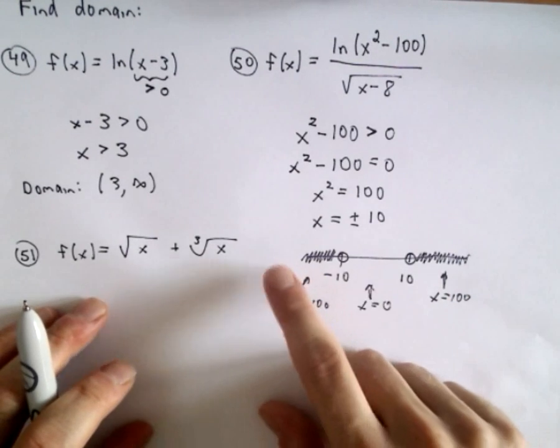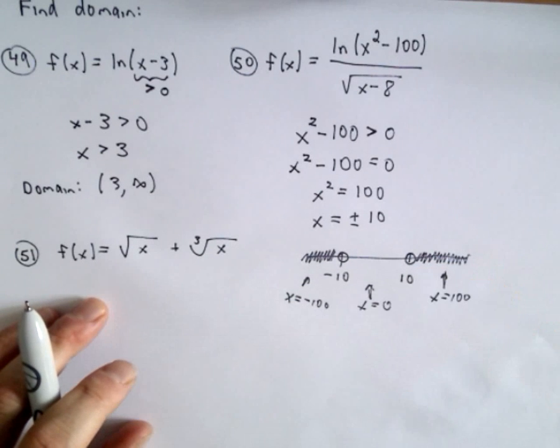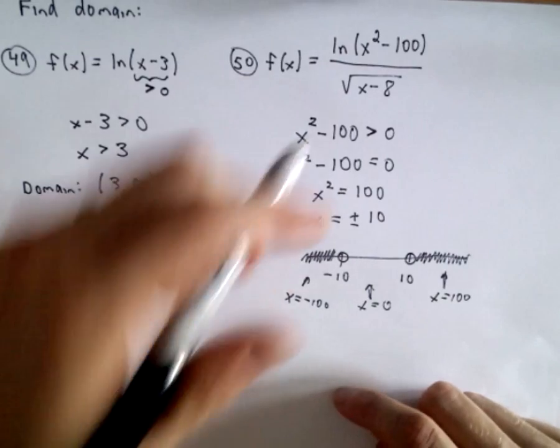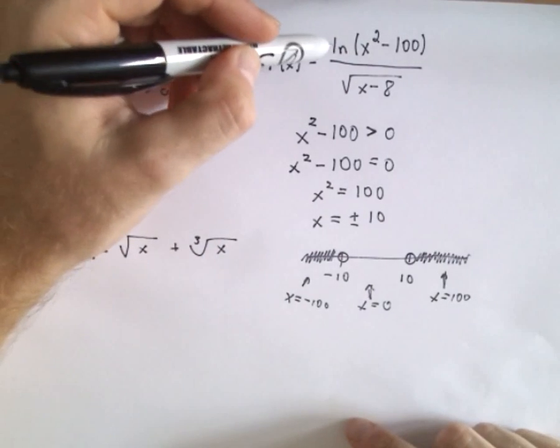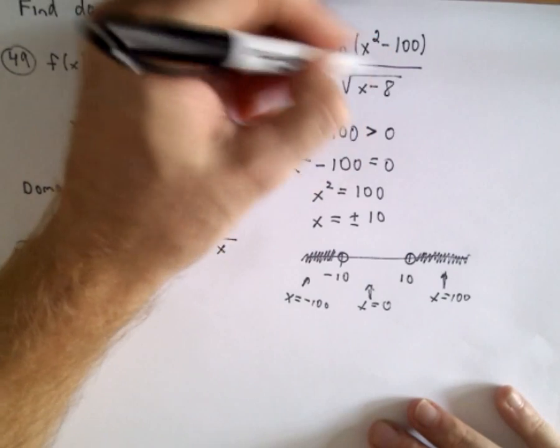So these are the numbers from negative infinity to negative 10, and then 10 to infinity. Those are going to be the values that satisfy the domain for the logarithm. Now we have to be careful, right, because we still have this radical in the denominator.